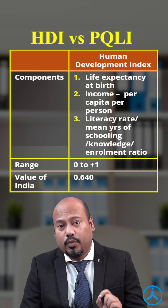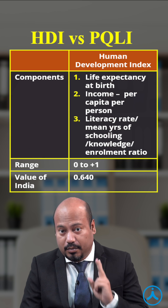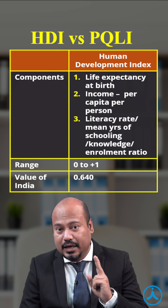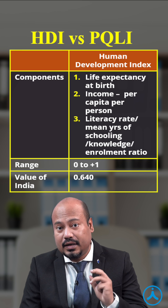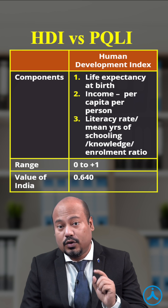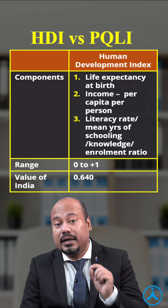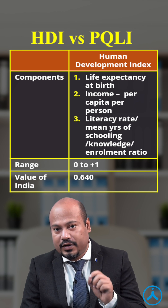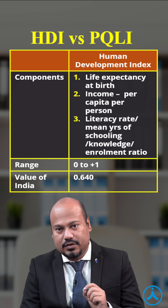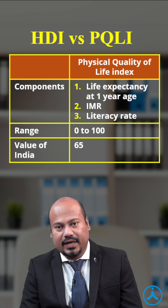The components of HDI are: number one, life expectancy at birth; number two, income per capita (per person); and number three, literacy rate, which is measured in terms of mean years of schooling, enrollment ratio, or knowledge.